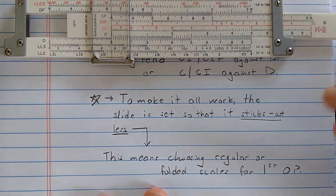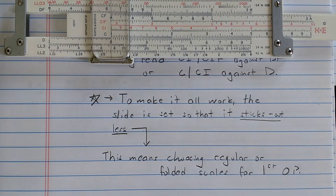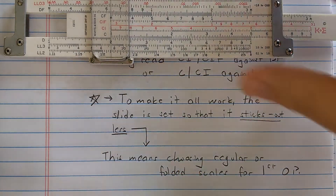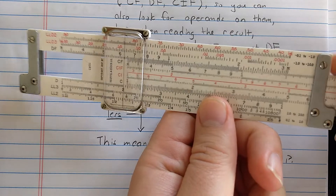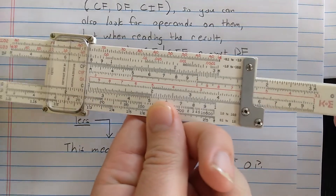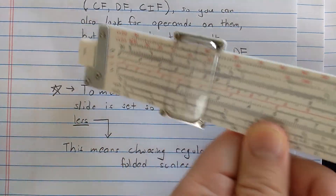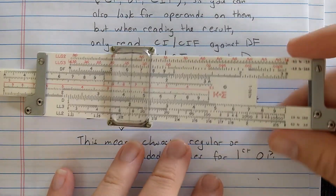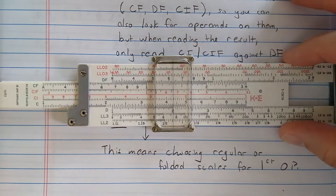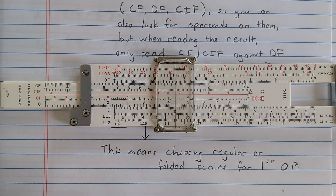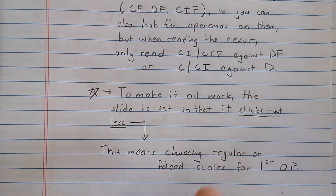To make this all work, you need to do your first operation so that the slide sticks out less — in other words, you want half or more of the slide on the slide rule. You don't want it all sticking out. That is the beauty of the folded scales: having pi-folded scales will most of the time guarantee that you can do what I'm about to demonstrate without off-scale calculation.